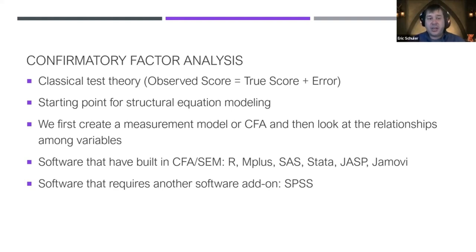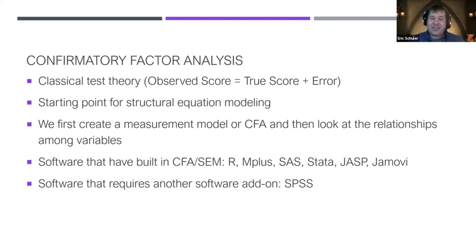The benefit of SEM is that constructs like depression and anxiety are things we can't directly scan for without measurement error. Instead we do data triangulation — using several items to get a proxy of how well we can actually measure that construct. Software options include R, SAS, Stata, JASP, jamovi, and Mplus.